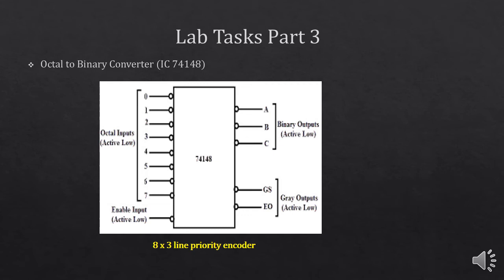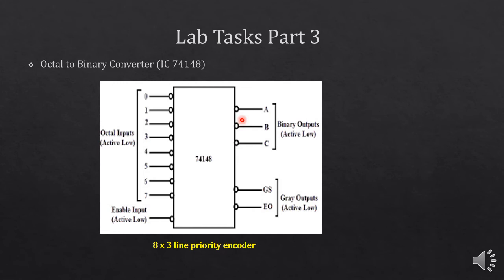In the next part of this lab, you have to implement an octal to binary converter. The IC that you are going to use is 74148. This is an 8-to-3 line priority encoder IC, which has 8 active low inputs and 3 active low outputs. To enable this IC, you have to apply ground at the enable pin as it is working on active low logic. There are two other pins being used — GS and EO — which are group outputs. You don't need to use these pins in your lab.